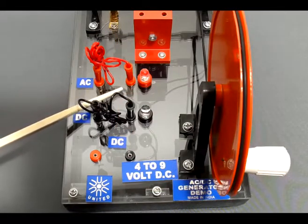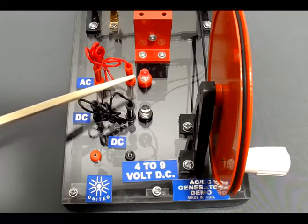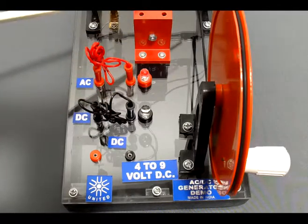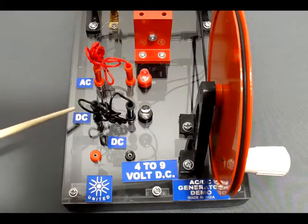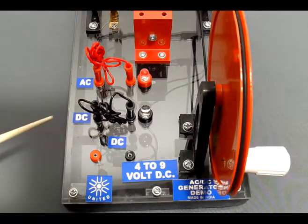When you connect the two AC ports, you can power the light bulb from the right hand side, which is the AC side. When you connect the two DC ports, you can power a light bulb from the DC side.